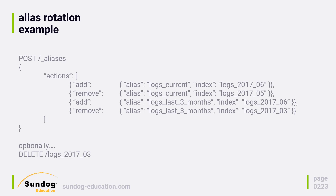Let's say we have a new month of log data organized into one month per index, and log data for June 2017 has just come in. If we want a logs_current alias pointing to the most recent month, we would add logs_2017_06 to that alias and simultaneously remove the previous month, logs_2017_05, from it. An alias can contain more than one index — it just searches them all together. So we're maintaining logs_current by adding June's data and removing May's data, ensuring it always points to the most recent month.